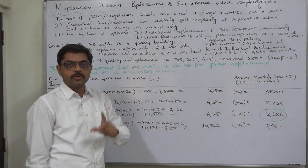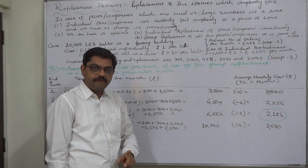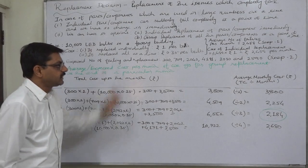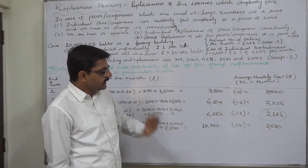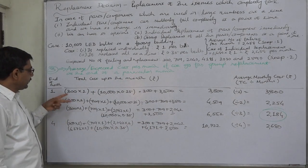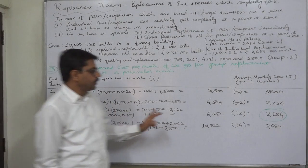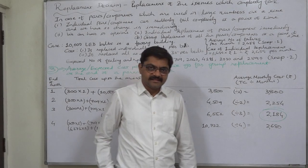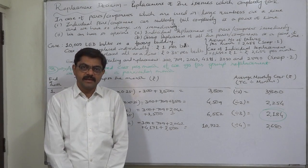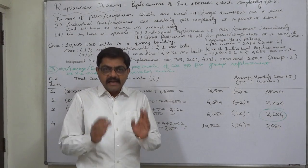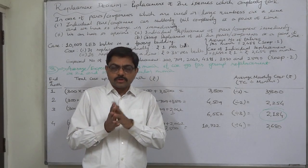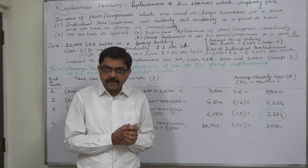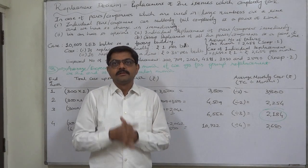This holds as long as the cost per bulb remains rupees 1 — if it increases, this cost will also increase. The conclusion of all three steps of the solution is: it is advisable for the company to prefer individual replacement for three months, and on the last day of the third month replace all 10,000 bulbs simultaneously. This was the comparison of individual replacement and group replacement in the case of a small asset or component used in bulk, where individual cost is low but failure can occur suddenly. Thank you very much.